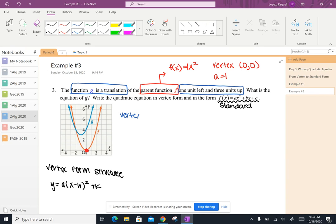that means my vertex of g is going to be at (-1, 3) because we're going 1 to the left and 3 up. And if I look at the picture that they give me, I can also see the vertex here. So that vertex matches up with our graph. It's at (-1, 3).